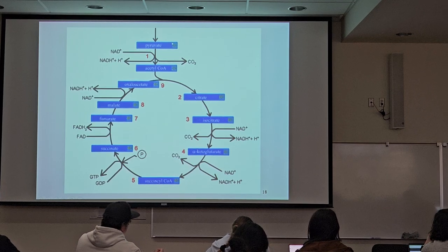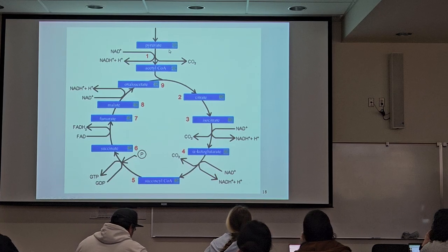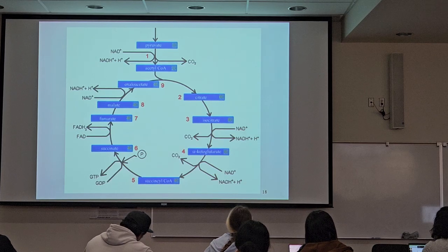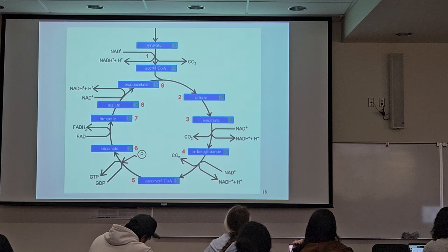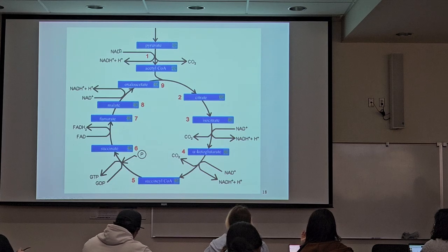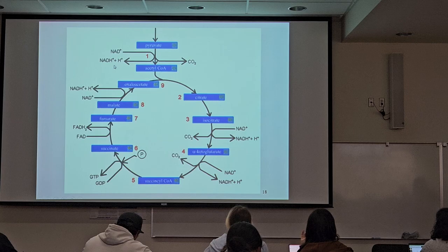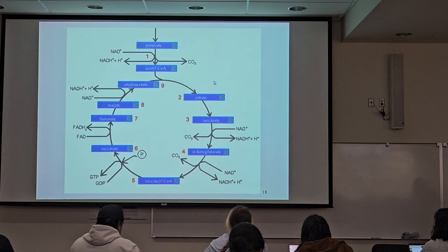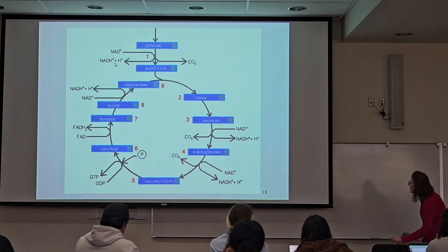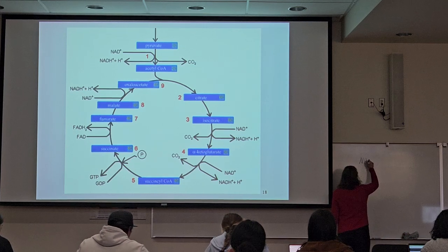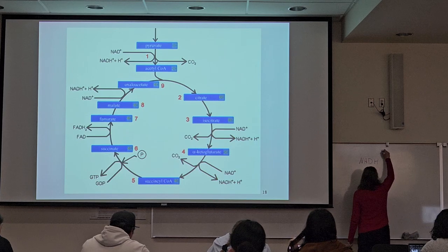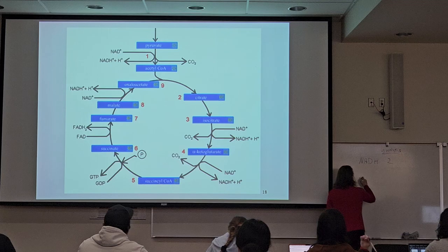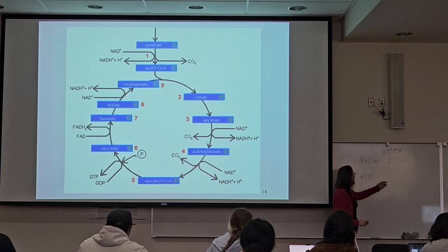So we've got two of these now. And then look at this. What kind of a reaction do you think this is? Redox, yes. Redox reaction. And how can you tell that? You see this NAD+ is taking the electron and becoming reduced to NADH. Now we've got two of these. So let's keep track of these NADHs that we have so far. How many NADHs did we make in glycolysis? Two.